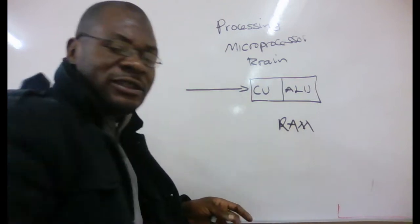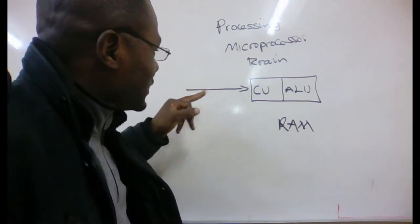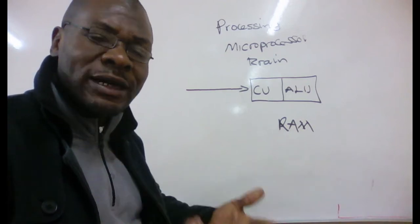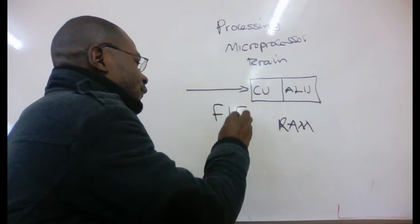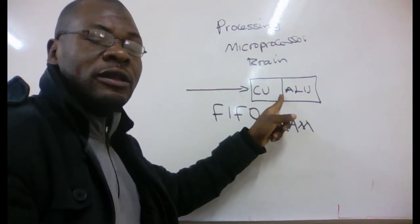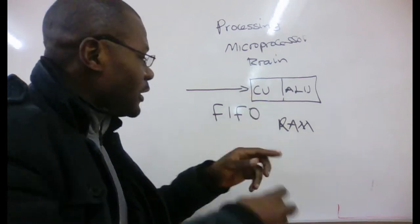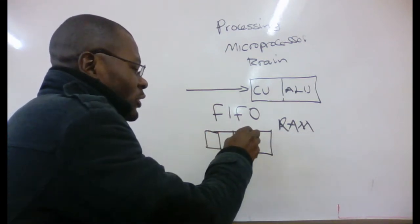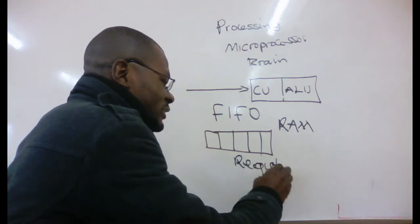Any data coming into the computer system goes to the Control Unit. In the Control Unit, we can receive a lot of data at the same time, and that data will be treated first-in, first-out. What that means is that the data that goes into the CPU first is the data that will be processed first, before data that comes in later. To avoid confusion, the Control Unit has storage spaces known as registers — the registers are the temporary storage spaces found in the Control Unit.